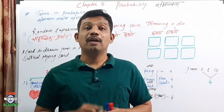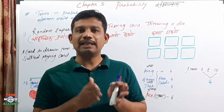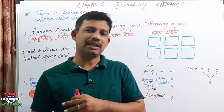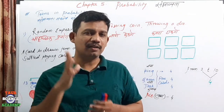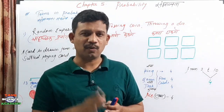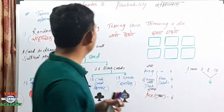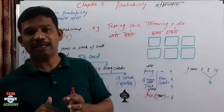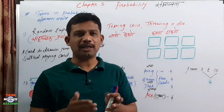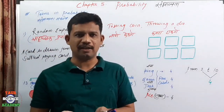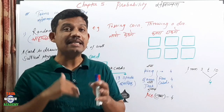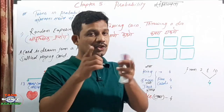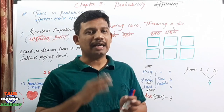Friends, there are some terms in probability that we need to understand. Once we understand those terms, we can proceed to Practice Set 5.1. The first term is Random Experiment. In Marathi this is called 'Yadruchchhik Prayog' — meaning a random trial or experiment.